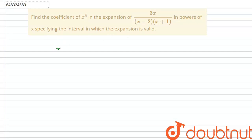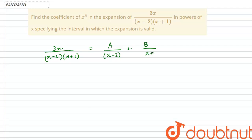We have the expression 3x divided by (x minus 2) multiplied by (x plus 1). We will decompose this into partial fractions, writing it as some constant A divided by (x minus 2) plus some other constant B divided by (x plus 1). We need to find the values of A and B for which this equation is true.